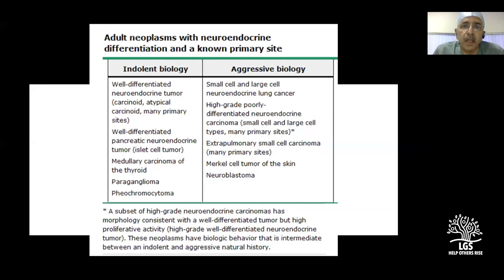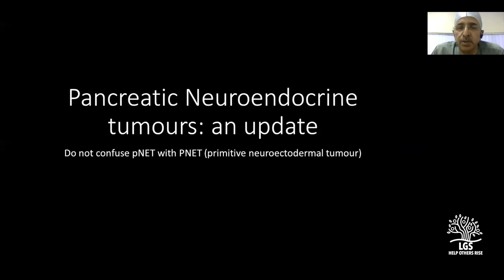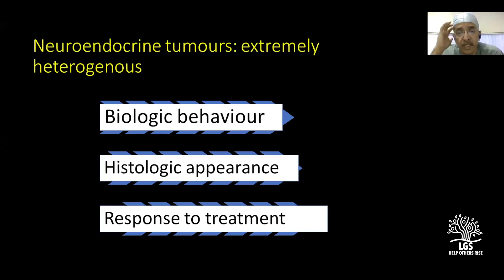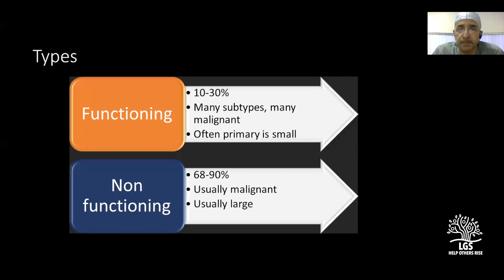For an update on pancreatic neuroendocrine tumors, many call it PNET, but if you go to an oncologist and mention PNET, they think of primitive neuroendocrine tumor, which is a distinct pathological entity. So it is better to call it a pancreatic neuroendocrine tumor. It is one component of the gastroenteropancreatic (GEP) NET with 17 or more cell types, forming a very heterogeneous group with very different biological behavior, varied histologic appearance, and very different responses to treatment.